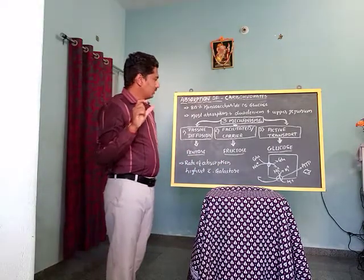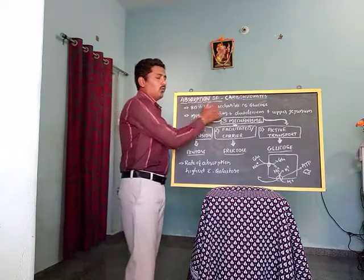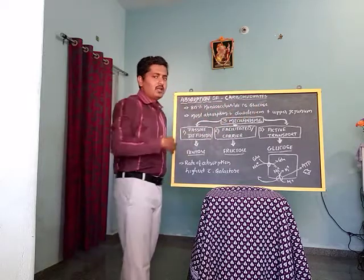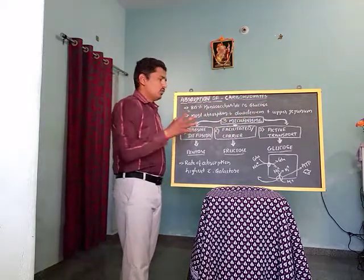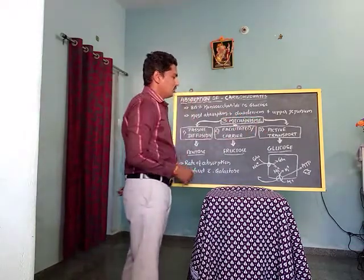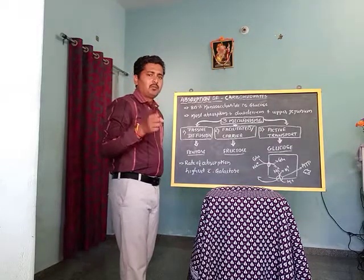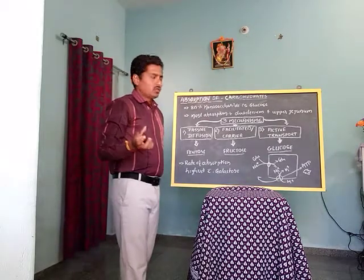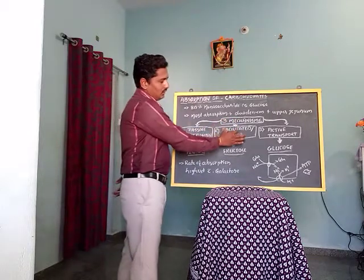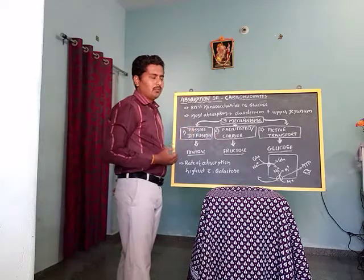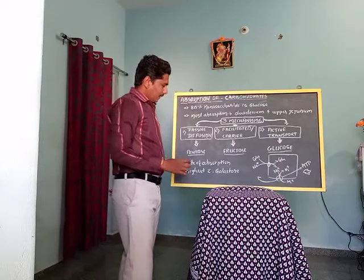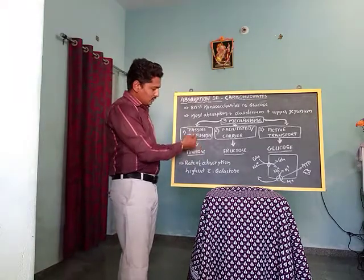In summary, 80% of digested carbohydrate in the small intestine is glucose. Most carbohydrate absorption takes place in the duodenum and upper jejunum. Three mechanisms help in the absorption of these monosaccharides: passive diffusion, facilitated or carrier mechanism, and active transportation.